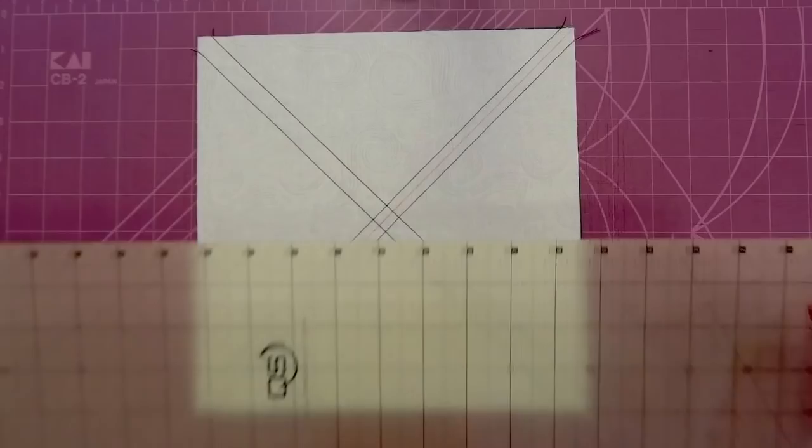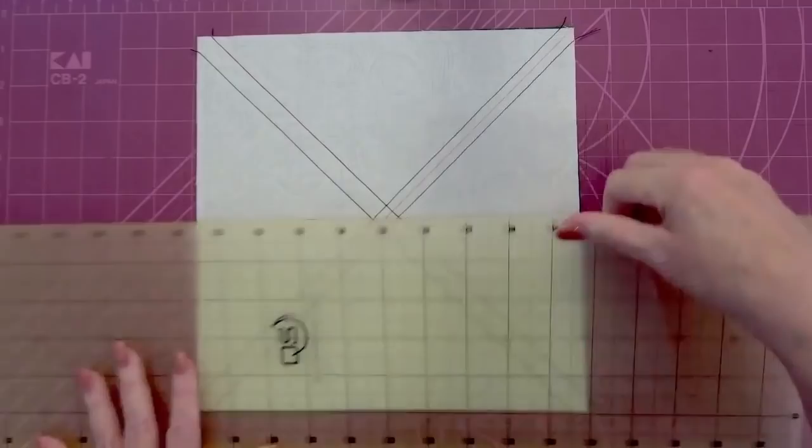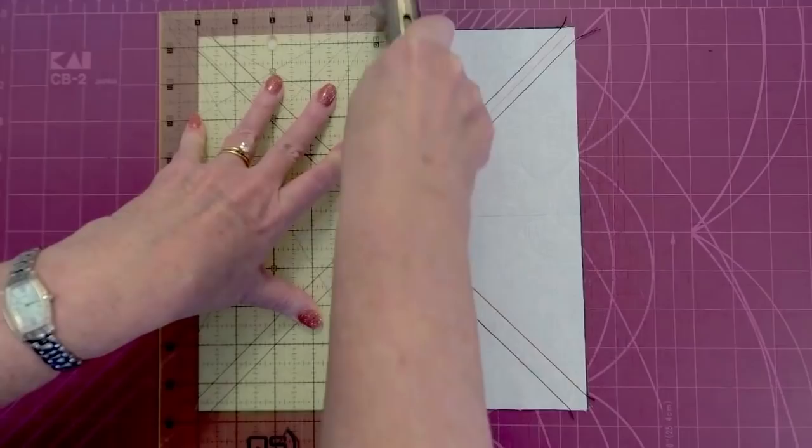So we're going to start off by cutting this into quarters. Now, you can line up and cut in the center of the diamond, or you can line up on the edge. It will be five inches from the edge, because we started with a 10 inch layer cake, of course. So we make two cuts, cutting this into quarters.